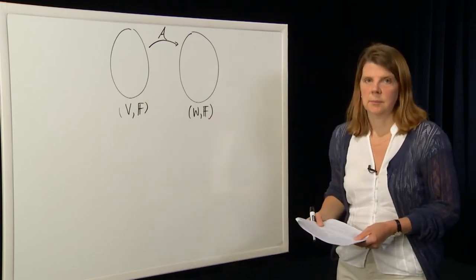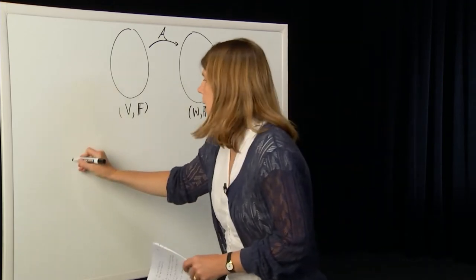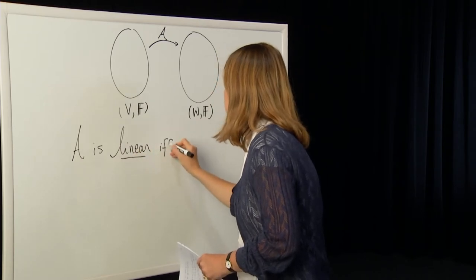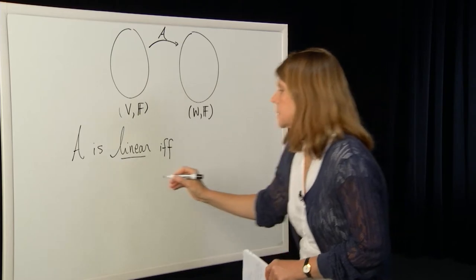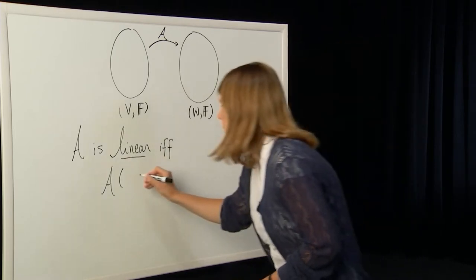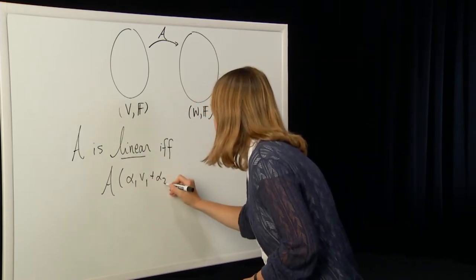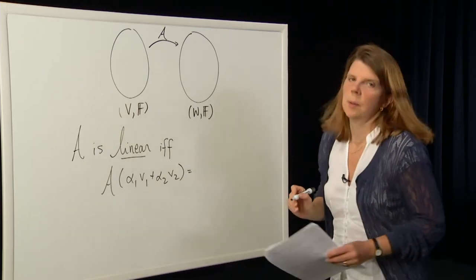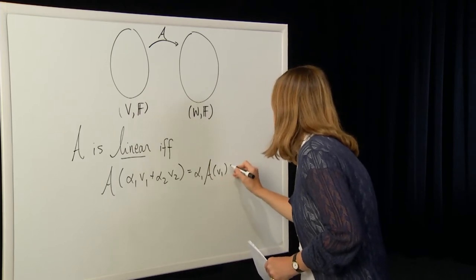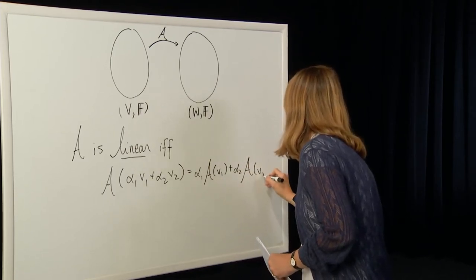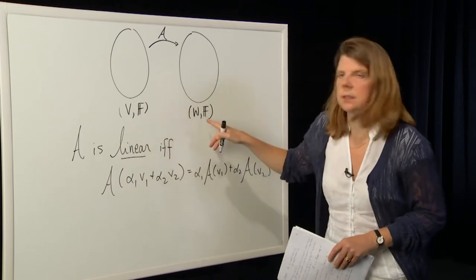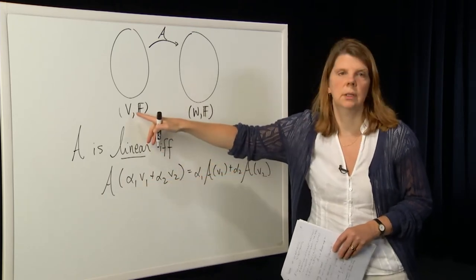A is said to be a linear map if the following property holds. If you take A and operate on a linear combination of elements in V — alpha1·v1 plus alpha2·v2 — then a property called superposition holds: A(alpha1·v1 + alpha2·v2) = alpha1·A(v1) + alpha2·A(v2). This is true for all alpha1, alpha2 in the field F and for all v1, v2 in the vector space V.